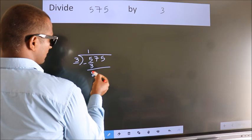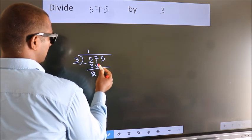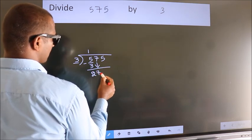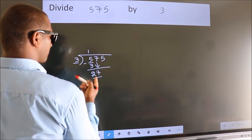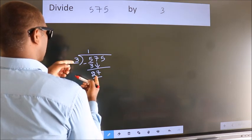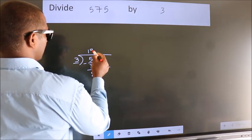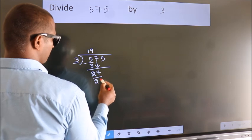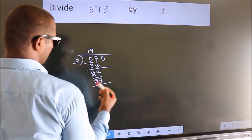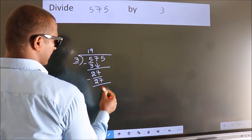After this, bring down the beside number. So, 7 down. So, 27. When do we get 27? In 3 table. 3 nines 27. Now, we subtract. We get 0.